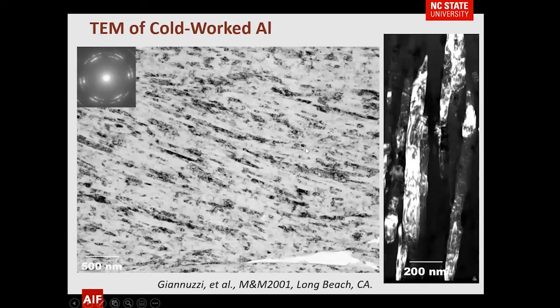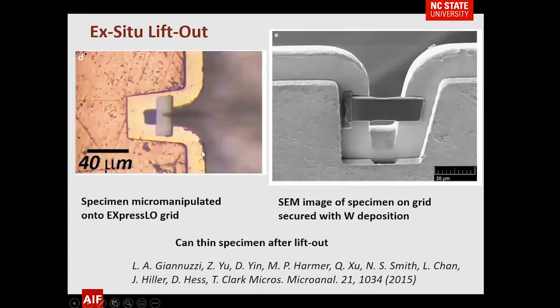This process has been refined further. Before, when we put the section on a grid, we couldn't thin it anymore. Now grids have been developed that allow you to place the section across an opening, enabling further thinning. There are advantages and disadvantages to this method, but both approaches are quite applicable.